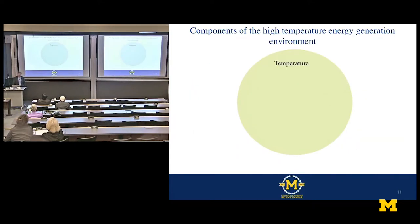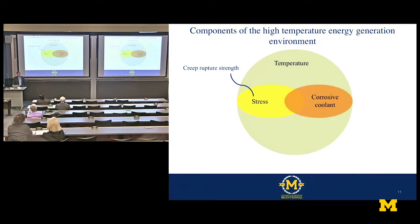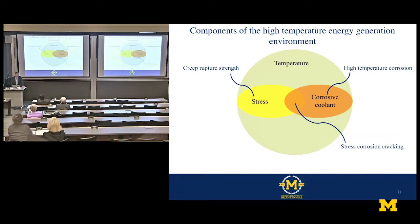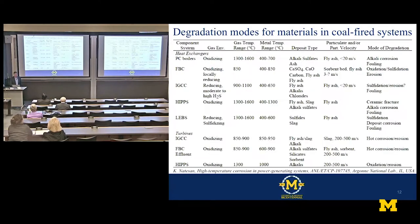In high-temperature environments that fossil plants see, temperature is a big issue, but so is stress. Creep rupture strength is a key feature in alloy selection and qualification for these applications. But the environment is also important — corrosion — because the coolant, whether water or another coolant, is going to be corrosive, especially at these temperatures. High-temperature components under stress and in a corrosive environment lead to stress corrosion cracking. We can't just focus on one property like creep strength for material selection; we have to take into account these other degradation modes.